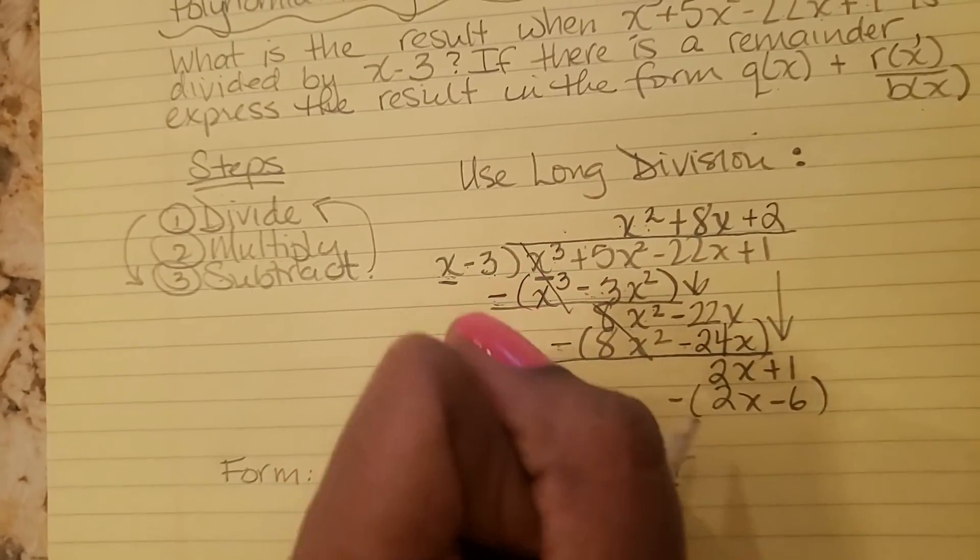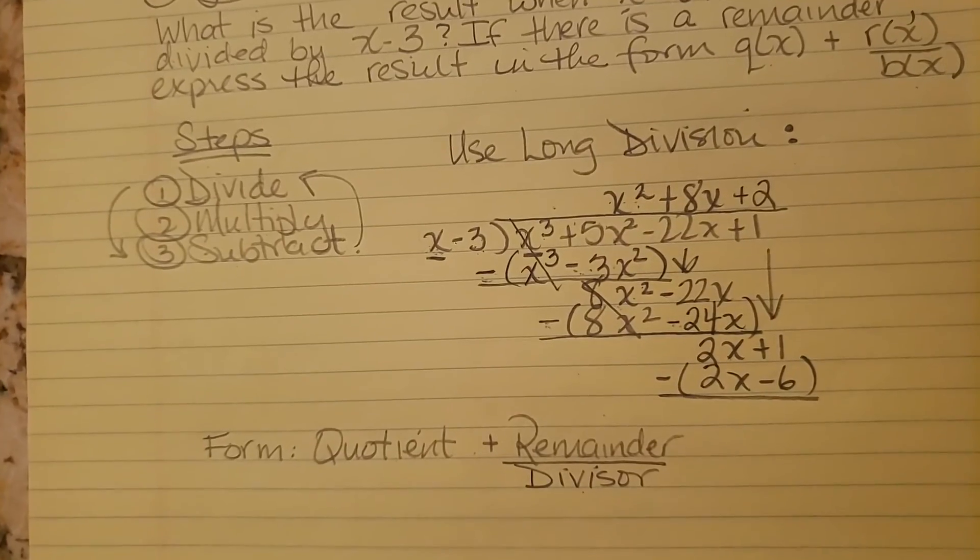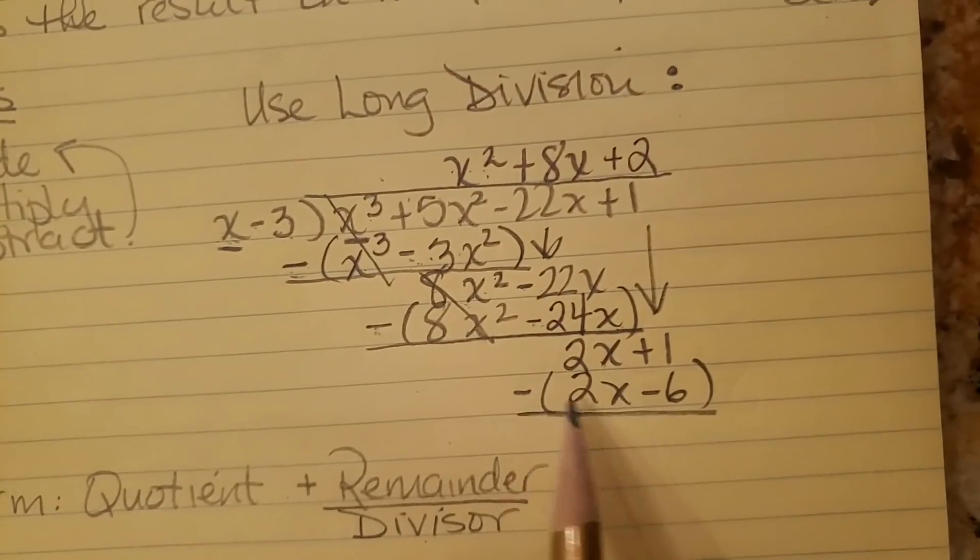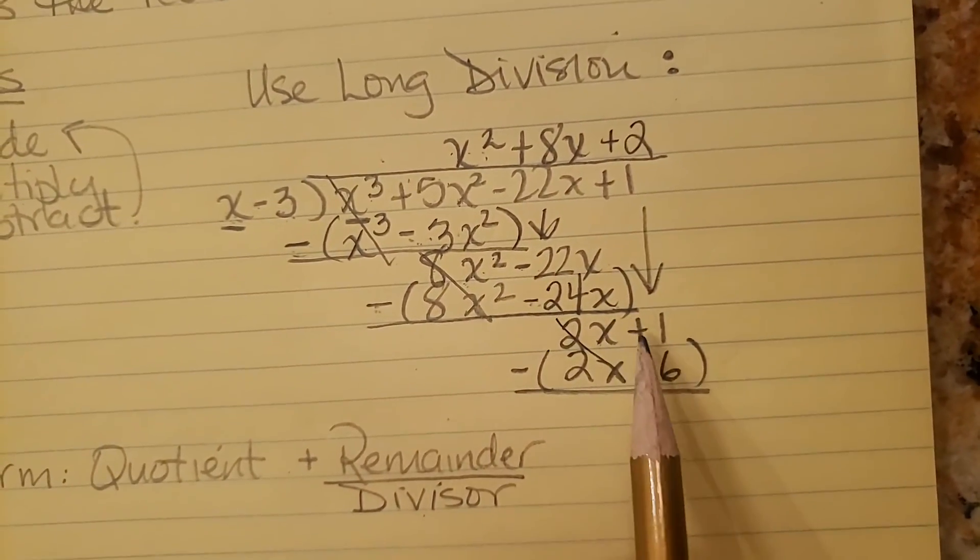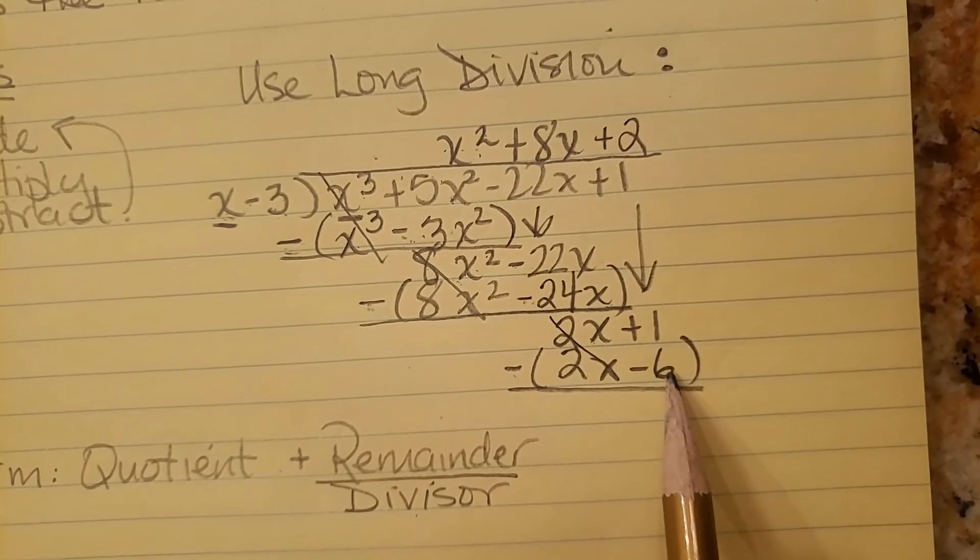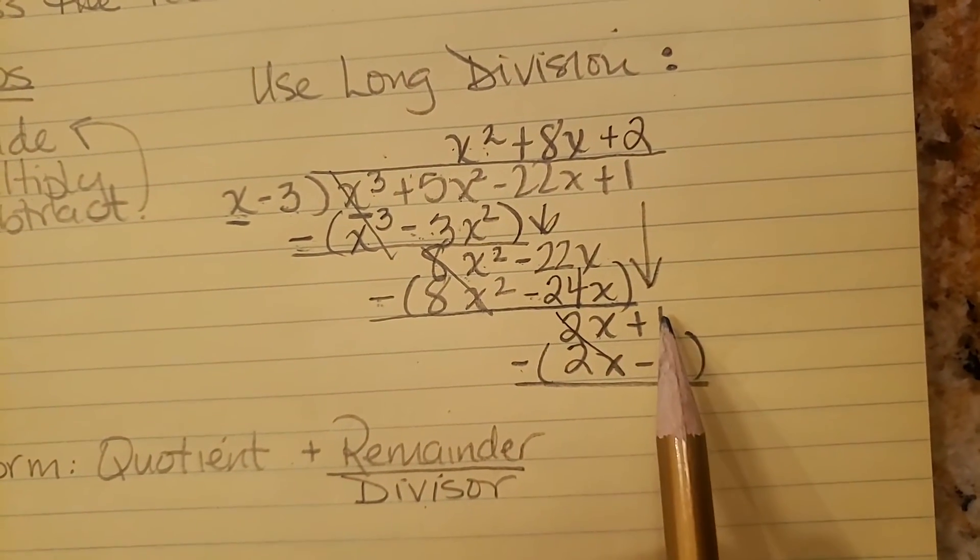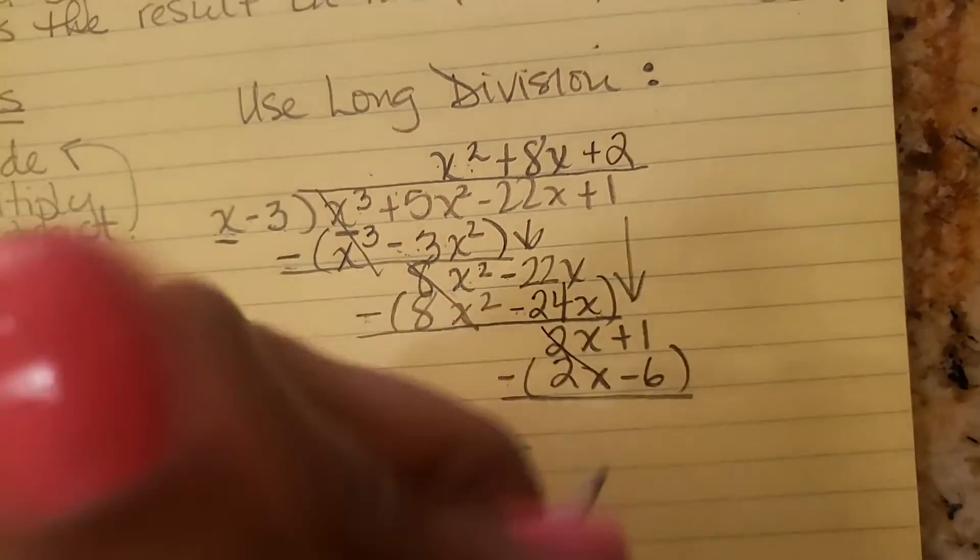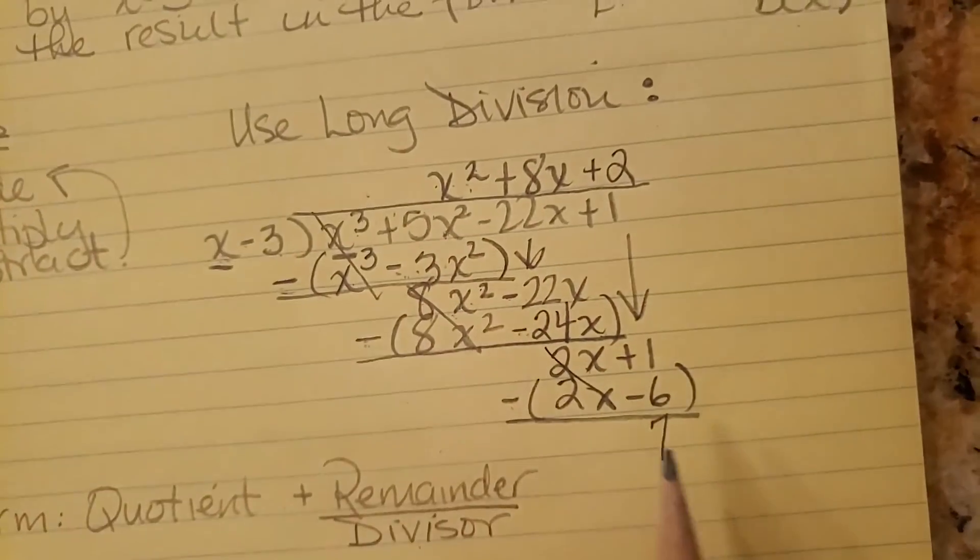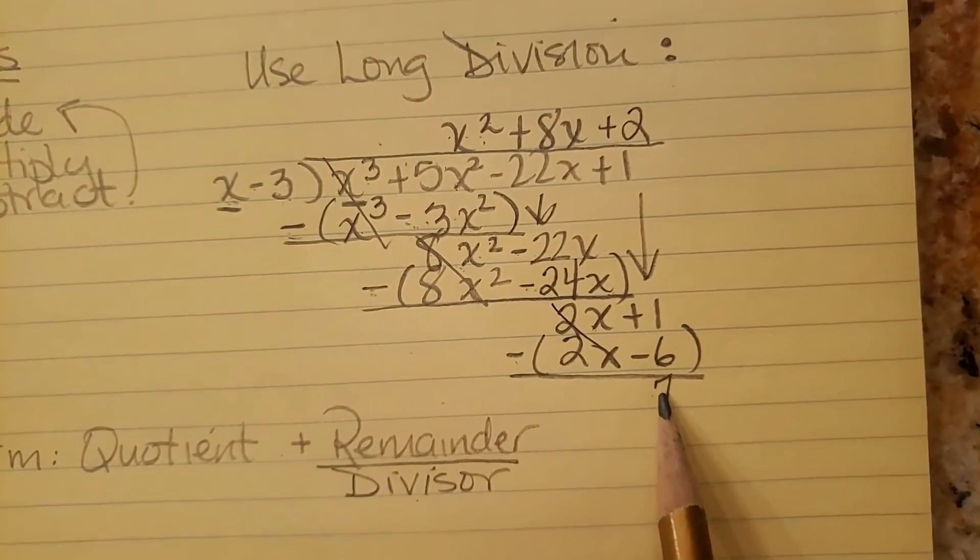And let's subtract. So what's 2x minus 2x? 0. And 1 minus negative 6, which is equivalent to 1 plus 6, which is 7. So we have a remainder, people.